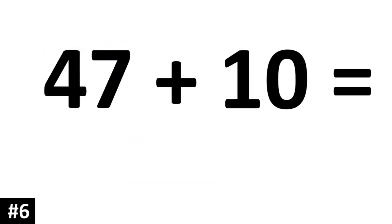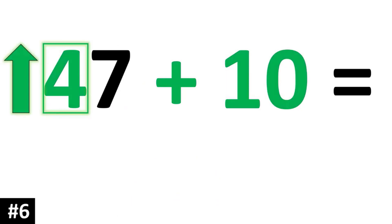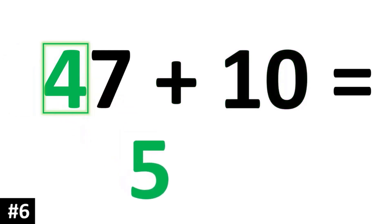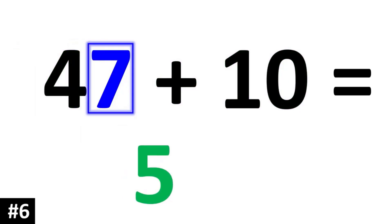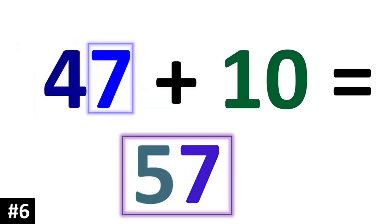47 plus 10: to add 47 by 10, that means the tens digit of 47 goes up by 1, or it means that 4 becomes a 5. And the ones digit stays the same, so we bring down the 7. 47 plus 10 is 57.